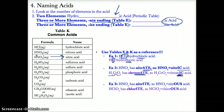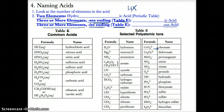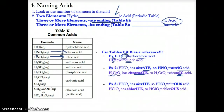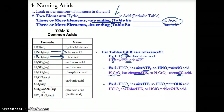HNO2 is H+ followed by the negative ion NO2-. The negative ion NO2- is nitrite on table E. Since NO2- is nitrite and has the -ITE ending, replace it with -OUS at the end: HNO2 is named nitrous acid.